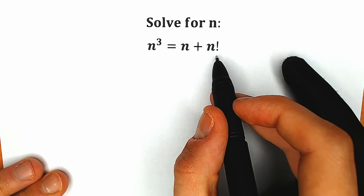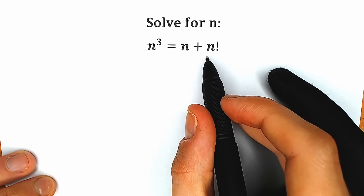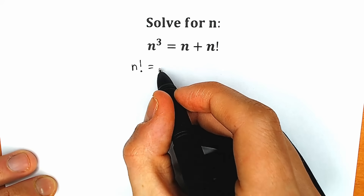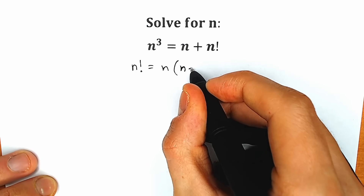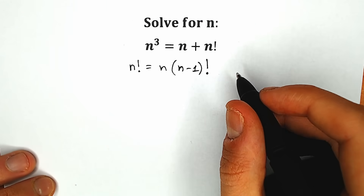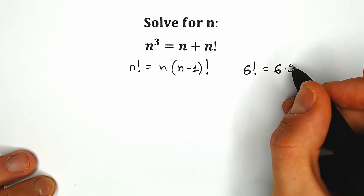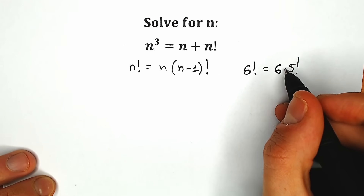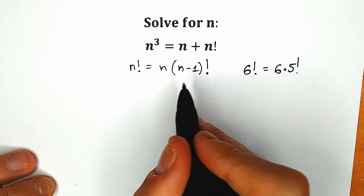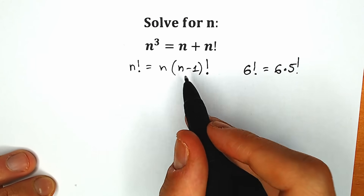A lot of students are confused about n factorial because we have a mixture and don't have a classic algorithm for simplifying it. So let's think about n factorial: in terms of school knowledge, n factorial can be expressed as n times (n−1) factorial. For example, 6 factorial equals 6 times 5 factorial. This works for variables too — I hope you understand this expression.